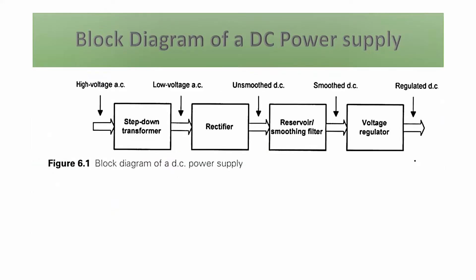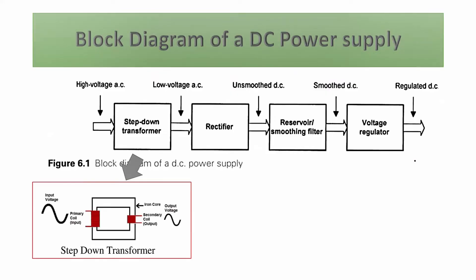This block diagram explains how high voltage AC is converted to regulated DC. The first element in this block diagram is the transformer — specifically, a step-down transformer. There are two types of transformers: step-up and step-down. A step-up transformer increases the voltage and a step-down transformer decreases the voltage.